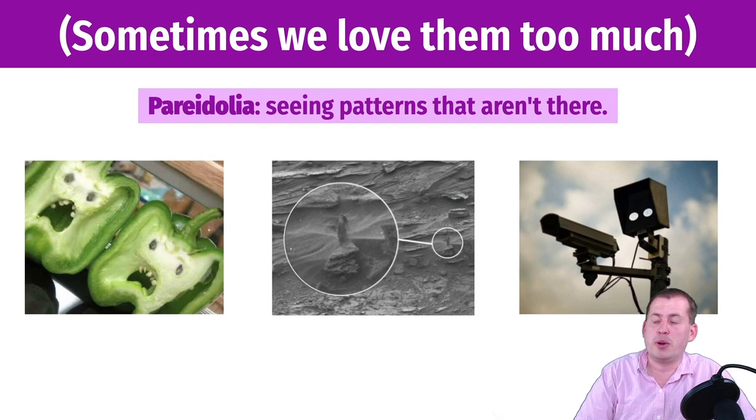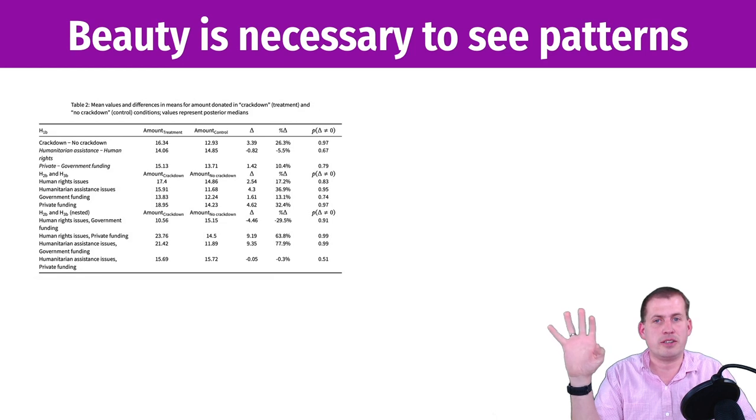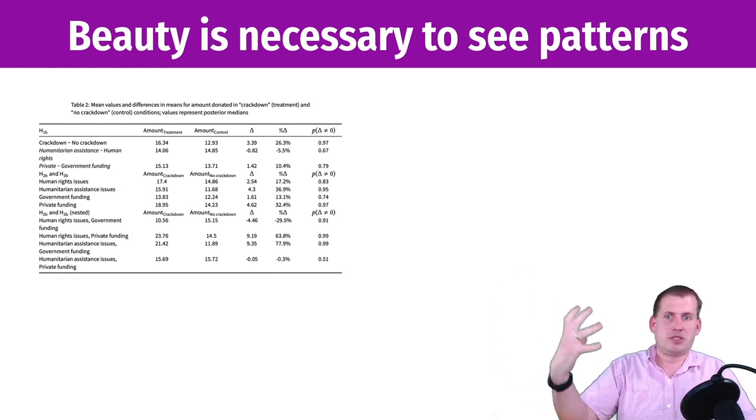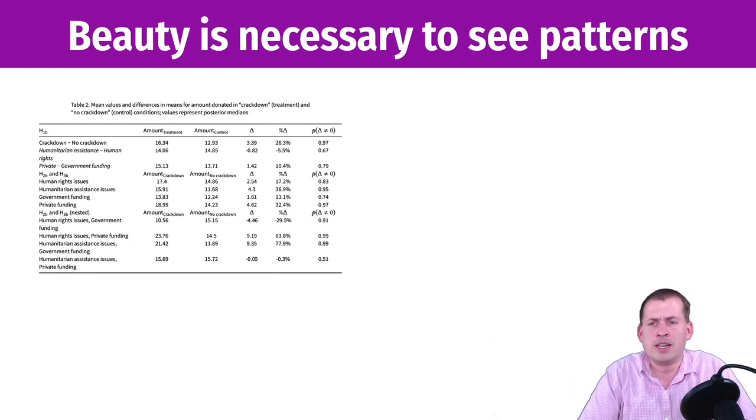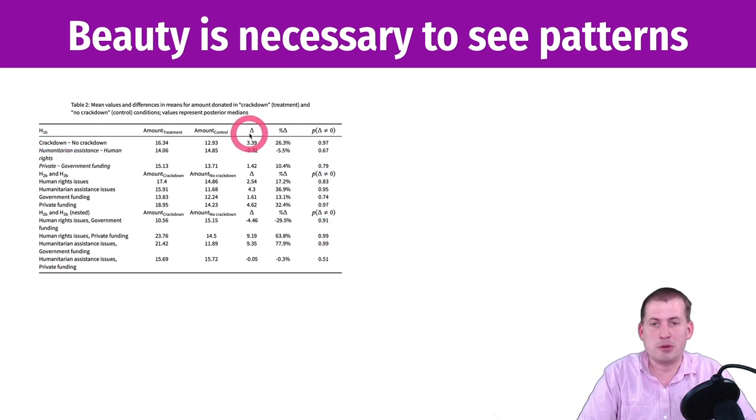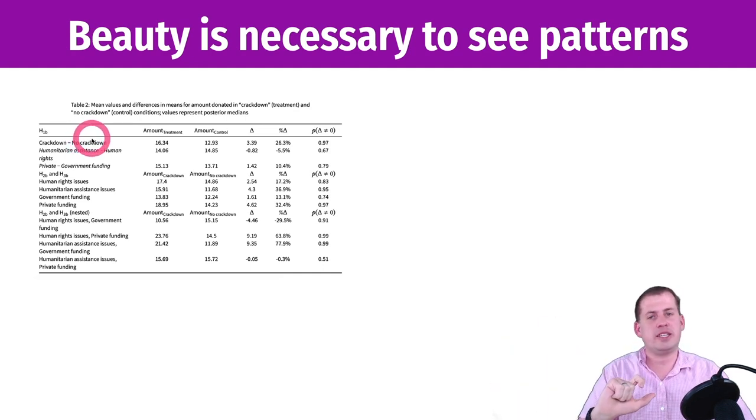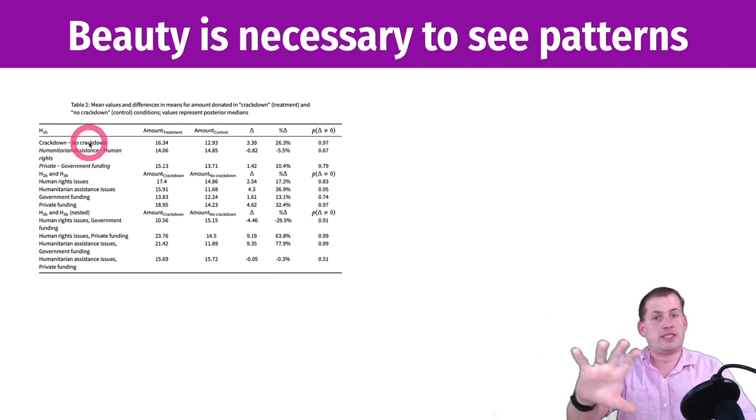But we also do need those patterns. For a good example here, and hopefully this will convert you to always visualizing data, very often in academic articles and in think tank articles and other public-facing statistical publications, you'll see tables like this. This is from a paper I wrote that looks at the effect of an NGO getting kicked out of a foreign country on donations to that NGO. Do donors care if the organization they like to donate to was kicked out of a foreign country because of a crackdown on NGOs?